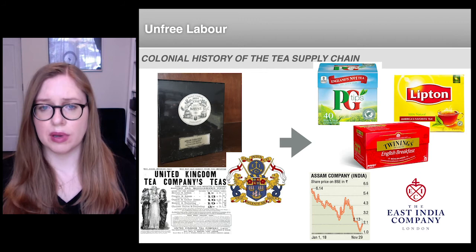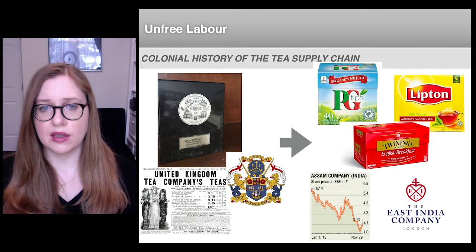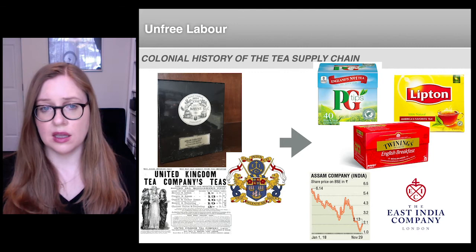Many of our contemporary tea companies actually originated in this era. For example, the Assam Company, which was awarded the Royal Charter by Queen Victoria and founded in 1839, monopolized the cultivation and production of Assam tea through the 1840s, 50s, and 60s — and they still trade today as the Assam Company.